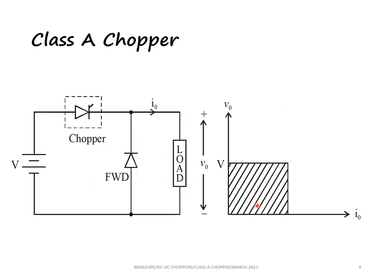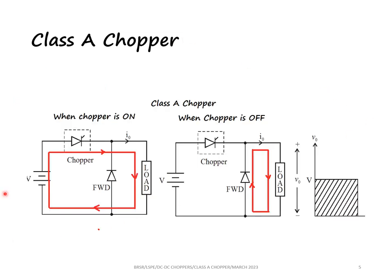The operation can be understood in two conditions: when the chopper is on and when the chopper is off. When the chopper is on, the current flows from the source through the chopper through the load back to the source. The current flows in the direction shown by the red line.